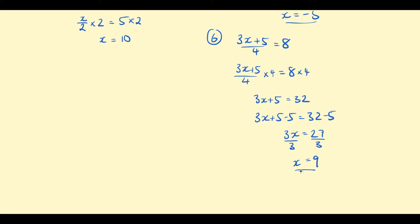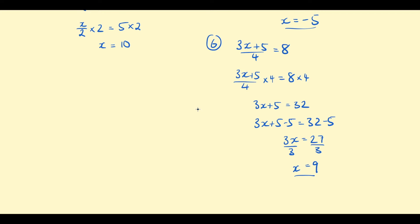Remember, with examples like this where you take lots of steps, you can always go back to the original equation and check. Take that value of x, substitute it in for x in the original equation and make sure it equals 8. So, 3 times 9 is 27, plus 5 is 32, divided by 4 is 8. You can always check you got the right answer at the end. Hopefully you're getting the idea of balancing now and also the inverse operation. In these examples, we looked at the inverse of addition, subtraction, multiplication, and division. You can think of the inverse operation as undoing whatever operation you have in the equation — if you have a division by 4, you multiply by 4 to undo that division.